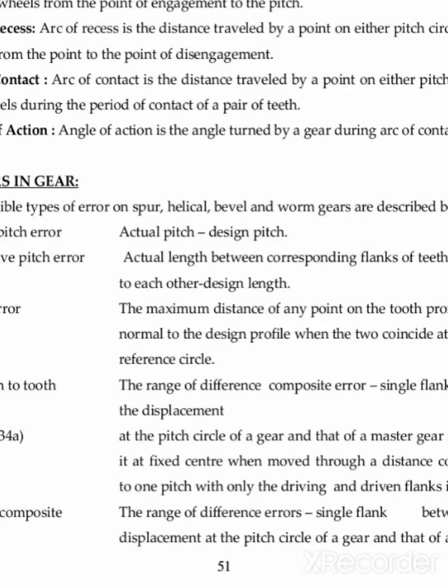We will start with adjacent pitch error. Before that I will explain pitch errors. Pitch error is a source of gear noise, and the character of this noise depends upon how pitch errors are produced and how they are distributed over the gear. This pitch error is further classified as adjacent pitch error, cumulative pitch error, and profile pitch error.